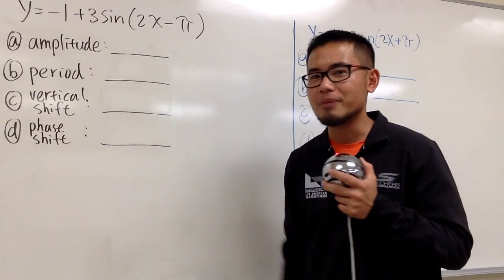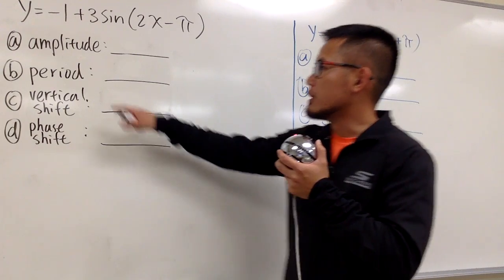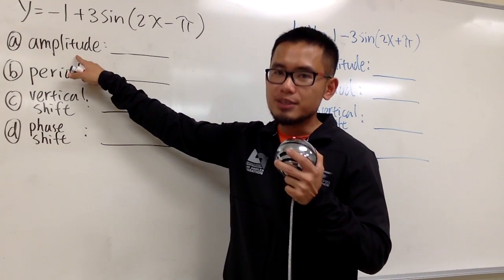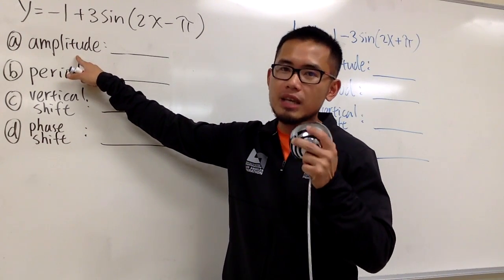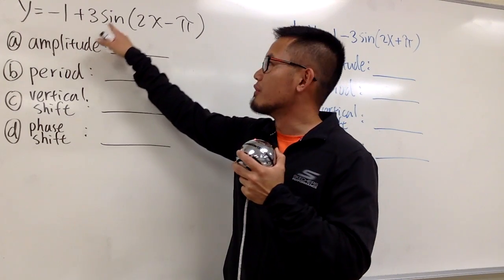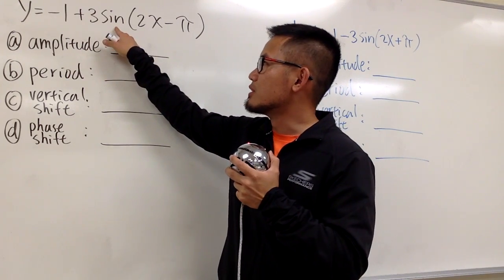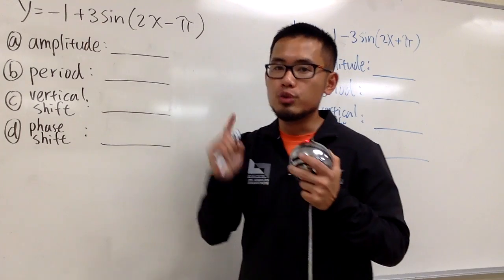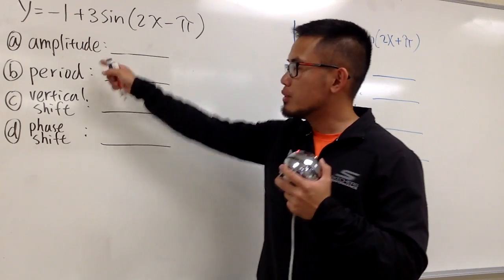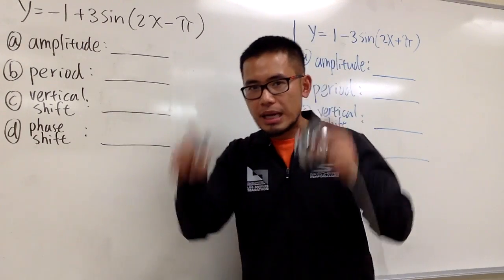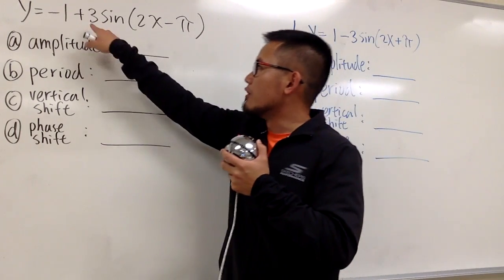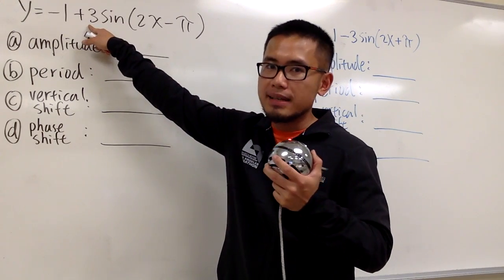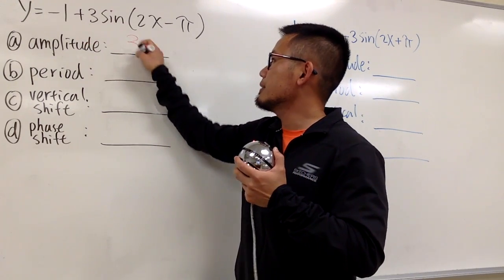Let's focus on this one right here and go ahead and identify the amplitude. This is just going to be the absolute value of the coefficient of the sine. As we can see, we have a positive 3 right here. For the amplitude, you always take the absolute value, so the absolute value of positive 3 still gives us positive 3.